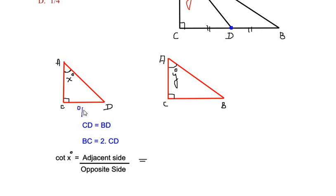Now here for the angle x, CD is the opposite side and side AD is the hypotenuse, and the remaining side is the adjacent, which is AC. So here we will write in place of the adjacent side, AC divided by the opposite side, which is CD.